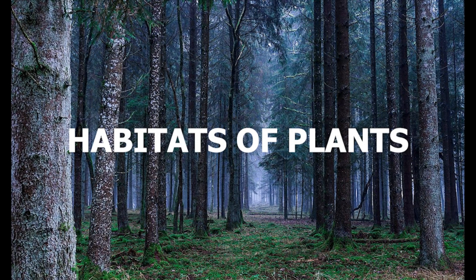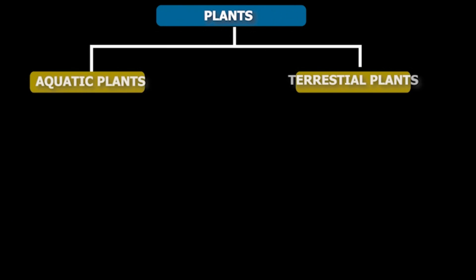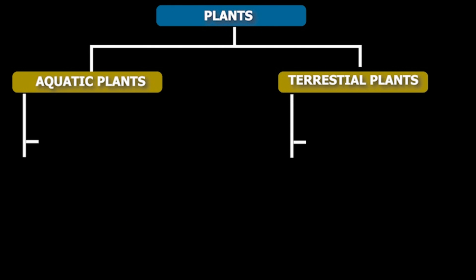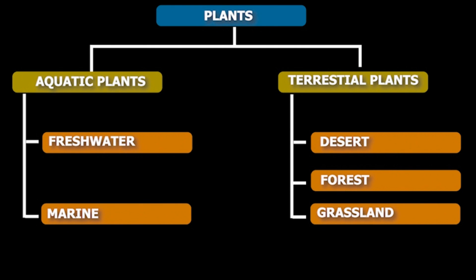Plants can be found both in the water as well as on the land. A habitat covered in water is known as aquatic habitat. Ocean, pond, lake, and river are a few examples of it.